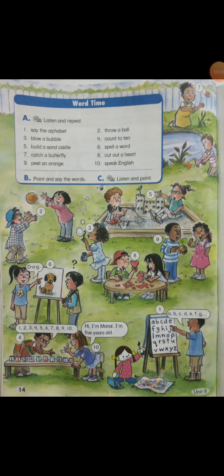Word time. Look at the pictures and you will find out the meanings of the vocab by yourself. Number one: say the alphabet. Number two: throw a ball. Number three: blow a bubble. Four: count to ten. Five: build a sand castle. Six: spell a word.